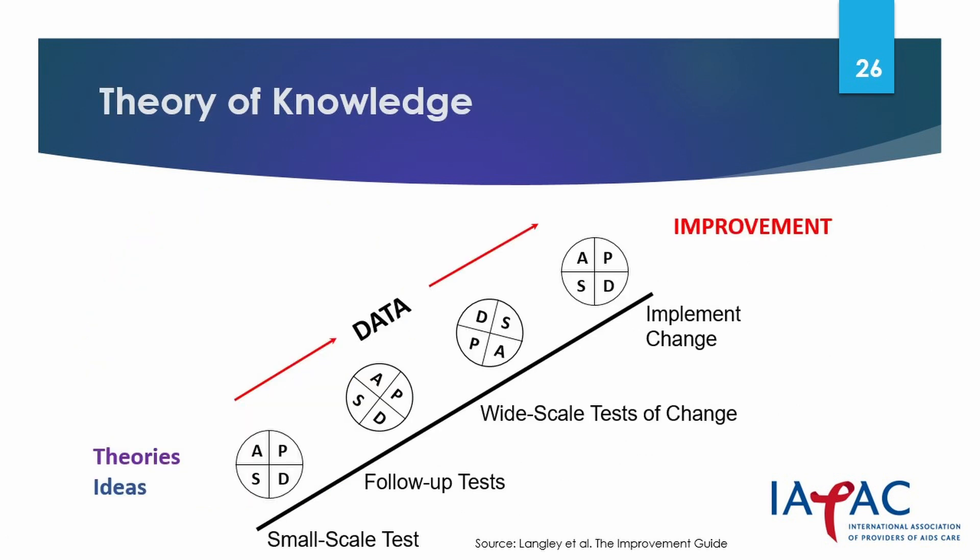Often, PDSA cycles are depicted as a ramp. The ramp starts on the left with theories and ideas, to which are added evidence-based data derived from cycles of learning and doing. As we adapt the ideas that we test and conduct follow-up tests on a larger scale, we build on our knowledge of what works best, honing in on the right solution before moving to a larger scale. A successful PDSA process does not equal a successful QI program. Other key components include accountability, good management, driven by all levels of staff and stakeholders, teamwork, and continuous review of the process.